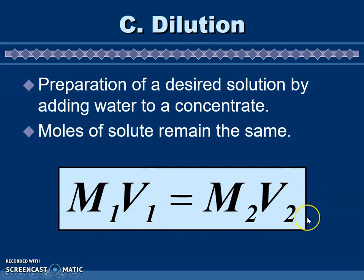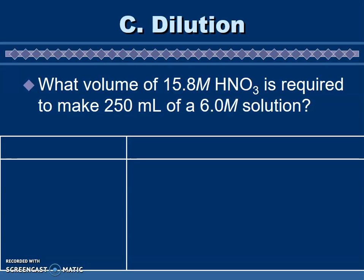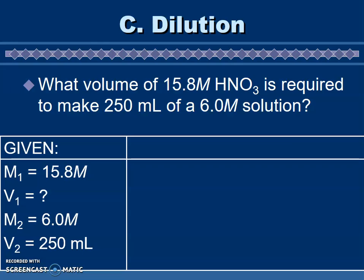Let's look at an example problem. What volume of 15.8 molar HNO3 is required to make 250 milliliters of a 6.0 molar solution? Like always, let's start by analyzing the problem for knowns and unknowns. We are given a molarity that we start with, 15.8, and we want to know what volume do we need of that. Our M2 is 6.0 molar, so we're diluting it down from 15.8 down to 6, and we want to have a finished amount of 250 milliliters, so that's our final volume.